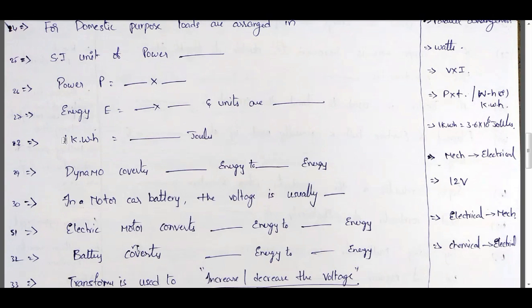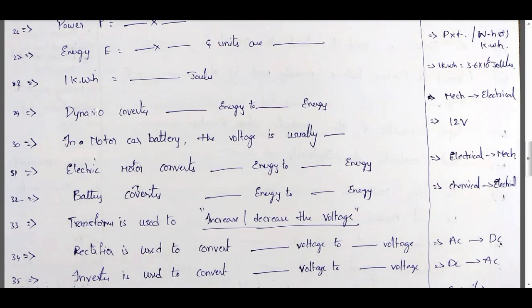Very important: 1 kilowatt-hour equal to 3.6 × 10⁶ joules. Dynamo is a DC generator — generator or dynamo converts mechanical energy into electrical energy. In case of a motor, the motor gives mechanical output.